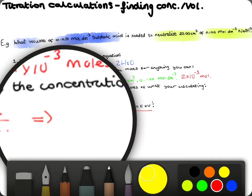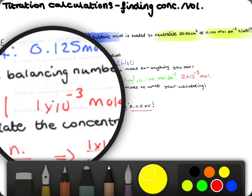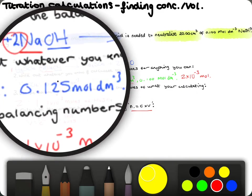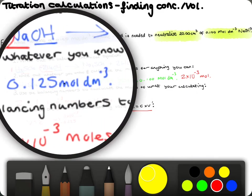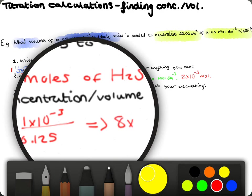Subbing in our numbers gives us 1 times 10 to the minus 3 all divided by 0.125 because, obviously, it's our moles of sulfuric acid. And this gives us our volume in decimetres, which is 8 times 10 to the minus 3.